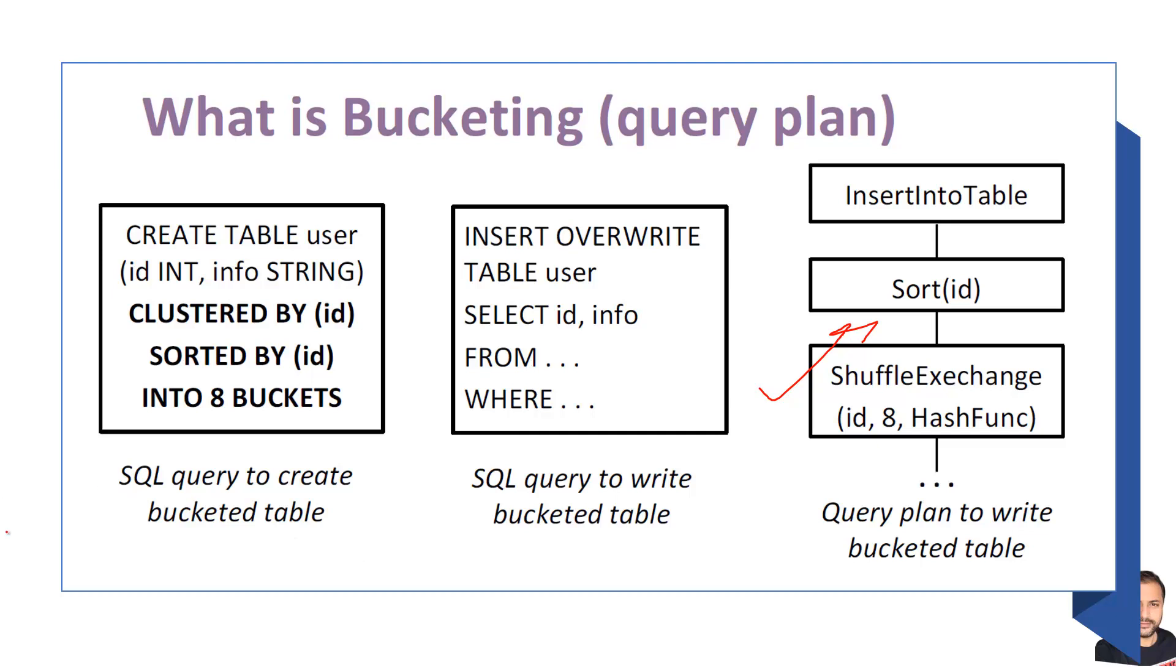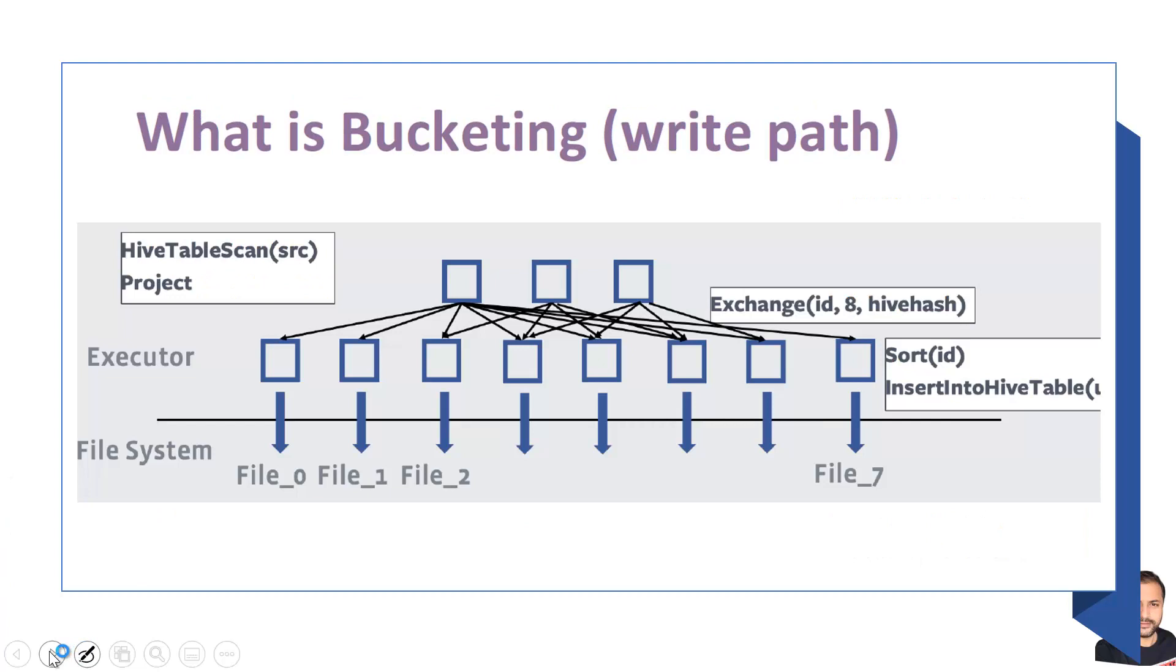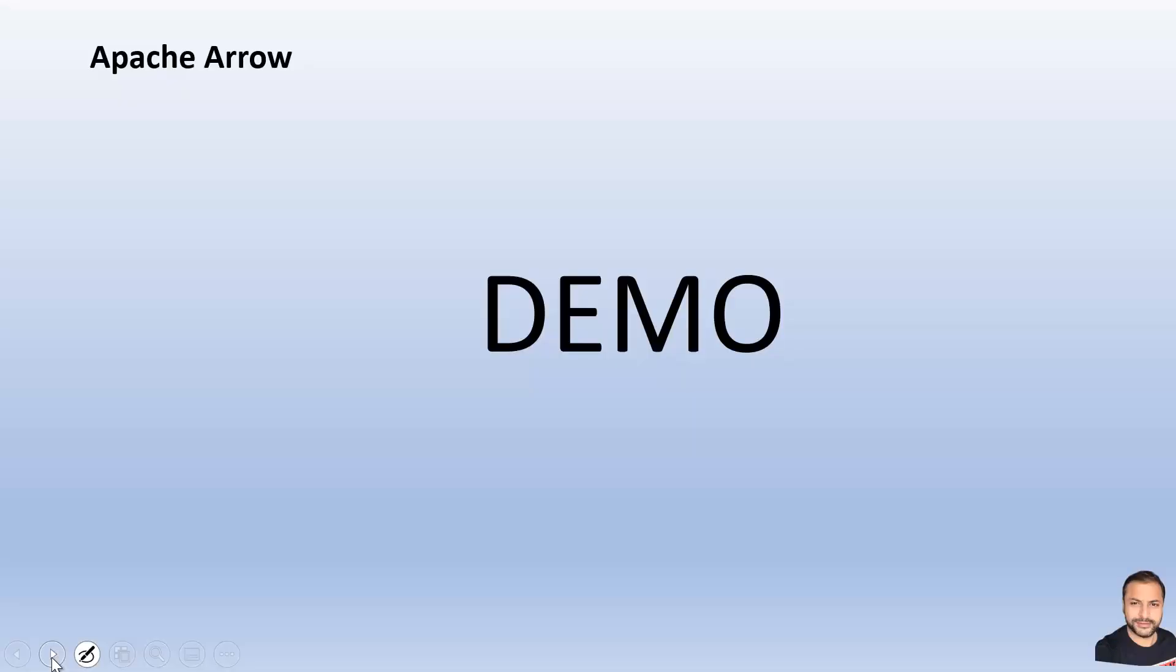That will be the difference in terms of writing to a normal table versus a bucketed table. You will have that scan happening here, then your shuffle or exchange stage will come to shuffle the data within its own buckets. Then when you write it into the Hive table, eventually the sorting of the data within the buckets would be performed.